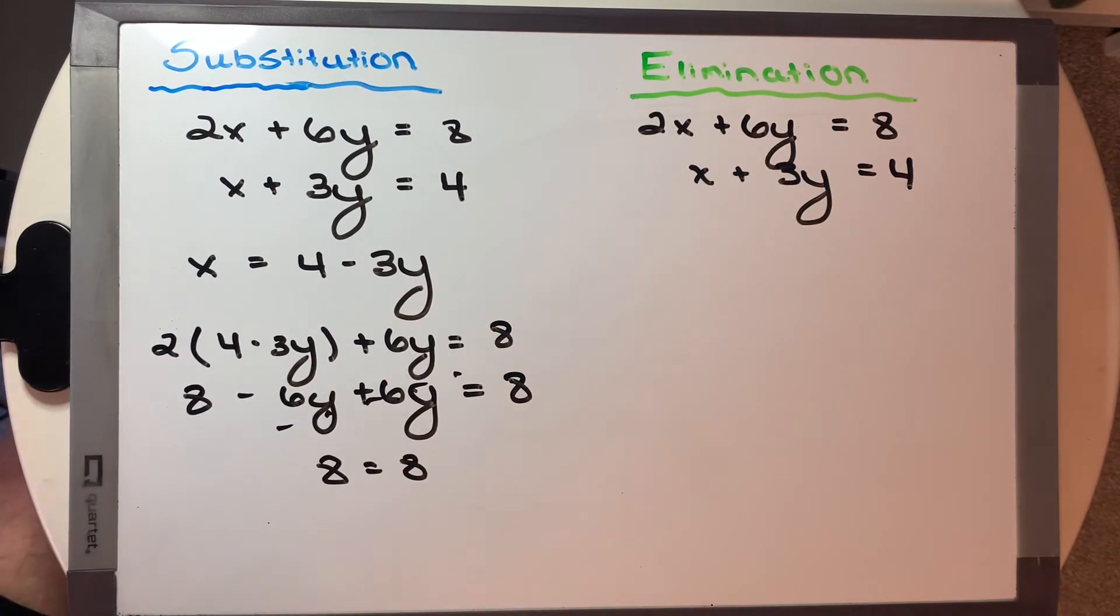But we also see that 8 equals 8. What does that mean? That's kind of strange. Anytime we get a solution where the left equals the right like this, we know that there has to be infinite solutions in this set, because for any y value, those will cancel, and the number will remain the same.